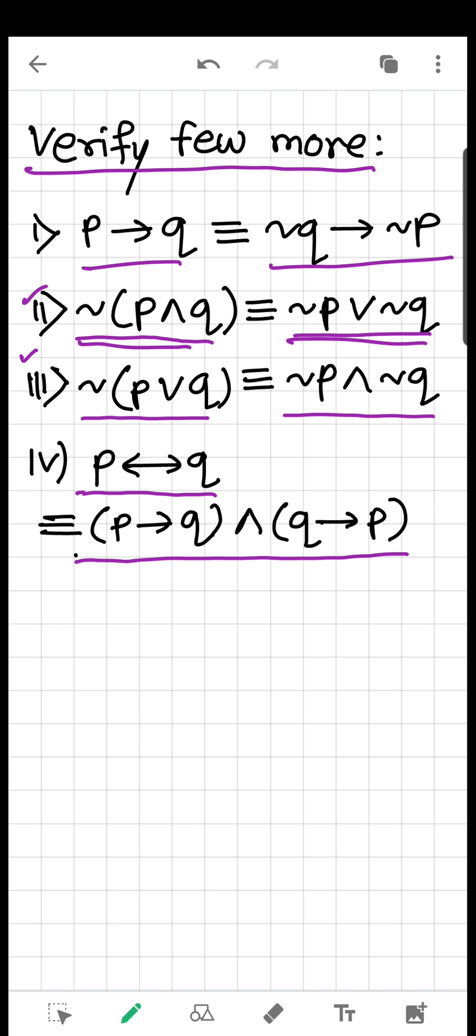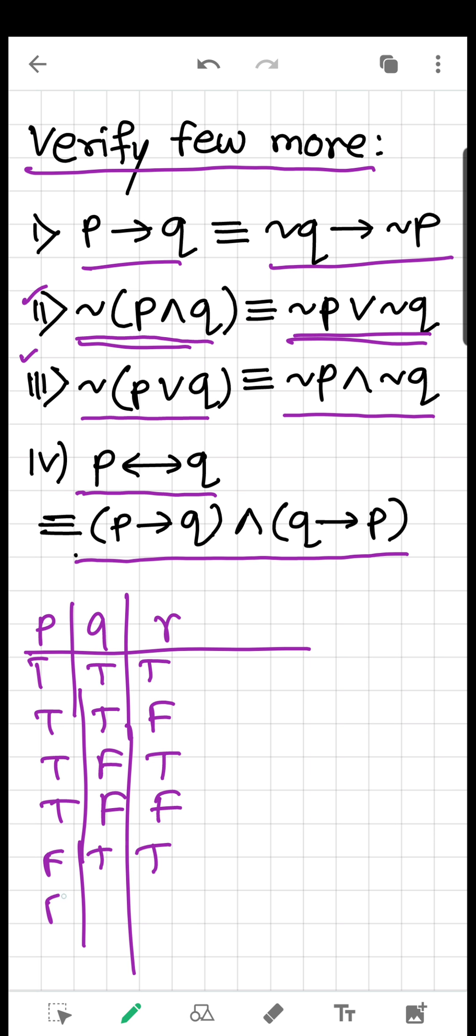Now, you might wonder what if I have three statements - P, Q, and R? Obviously, the method is the same. Just you will have three columns P, Q, R. Then we will have eight combinations of truth values, which are TTT, TTF, TFT, TFF, FTT, FTF, FFT, and FFF.